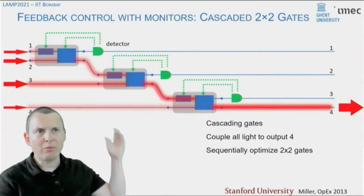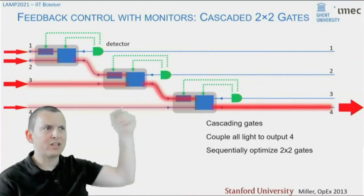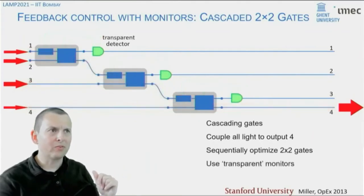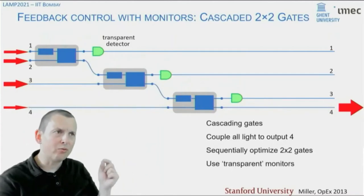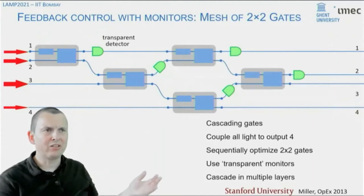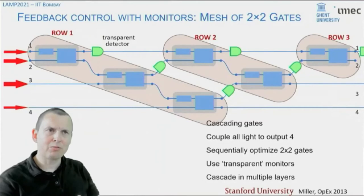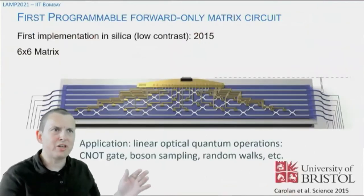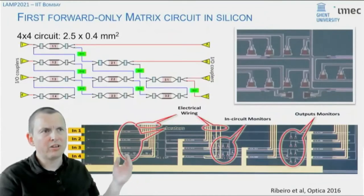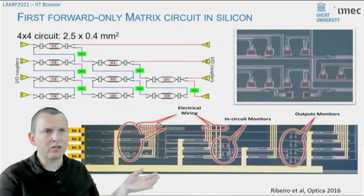As a result, all the power ends up in output 4 — again, without any calculations. Now we have this vector of light that will only couple to output 4, and nothing ends up in waveguides 1, 2, and 3. If you would inject another vector, that light would go into waveguides 1, 2, and 3. It makes sense to use a transparent detector — one that detects only a small fraction of the light and lets the rest go through. We can use the second row of gates to process any vectors orthogonal to our first vector, and repeat until we build a full triangular mesh like the one originally proposed by Reck and Miller. The first implementations of such a mesh were done by the University of Bristol in glass waveguides. One year later, we demonstrated one in silicon, which was much smaller — only four ports — and demonstrated exactly this algorithm to optimize all power into one output.